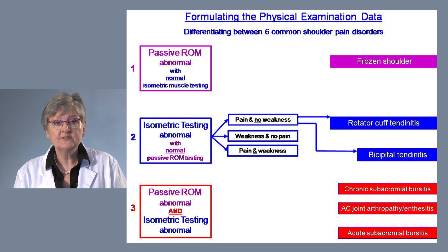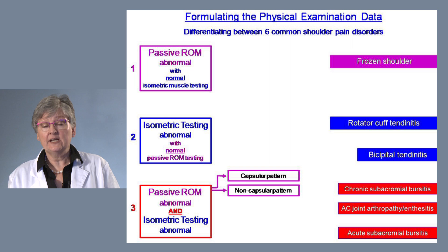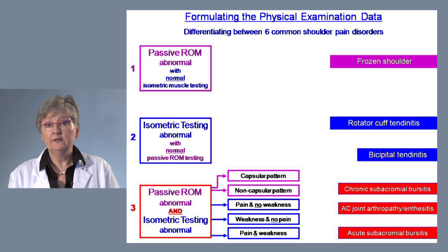When both passive range of motion and isometric muscle testing are abnormal, we must divide the passive range of motion into either capsular or non-capsular pattern, and divide the isometric testing into the three groups: pain and no weakness, weakness and no pain, or pain and weakness.